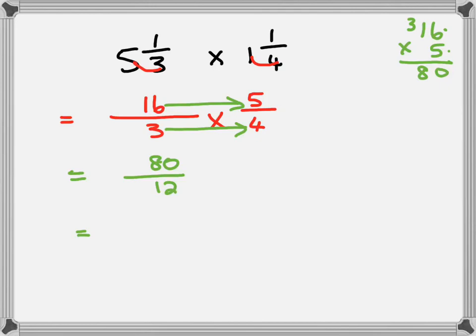And we're left with an improper fraction over here. So we're going to divide 12 into 80. It's going to go not 8 times, not 7 times. Let's work it out over here. 80 divided by 12.